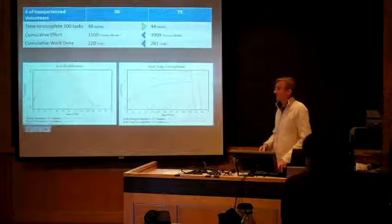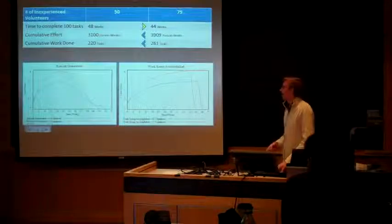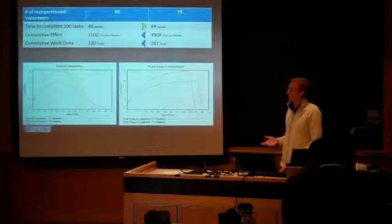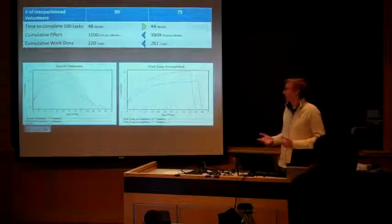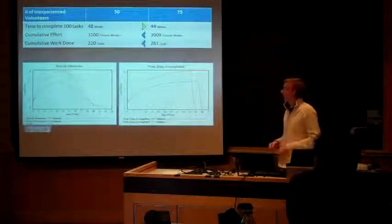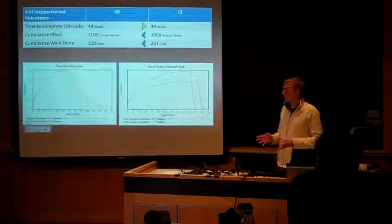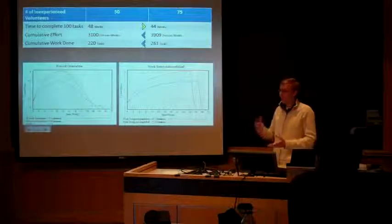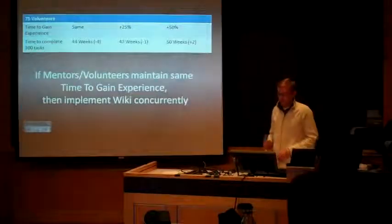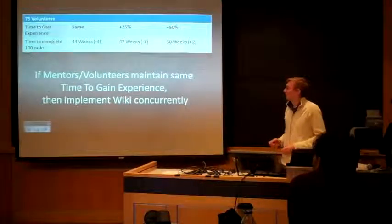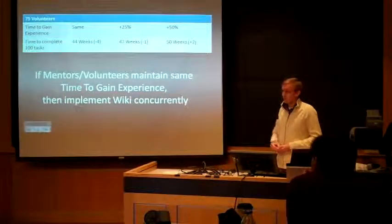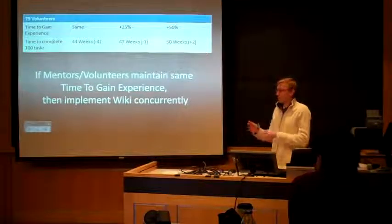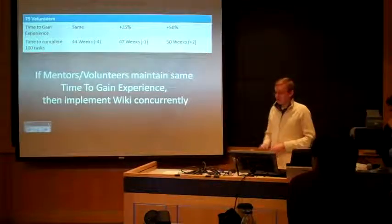Now that we've calibrated the model, we can go over our results. First, we tested the effect of increasing the number of initial volunteers from 50 to 75. We found this increases effort and work accomplished due to higher reward generation, and the rate of work being accomplished is significantly higher, reducing overall project time by four weeks. However, this assumes time to gain experience stays the same. Since adding more people changes the mentor-to-volunteer ratio, we did a sensitivity analysis increasing time to gain experience by 25%, which reduced the project by only one week, and at 50% increase the project actually runs two weeks late.